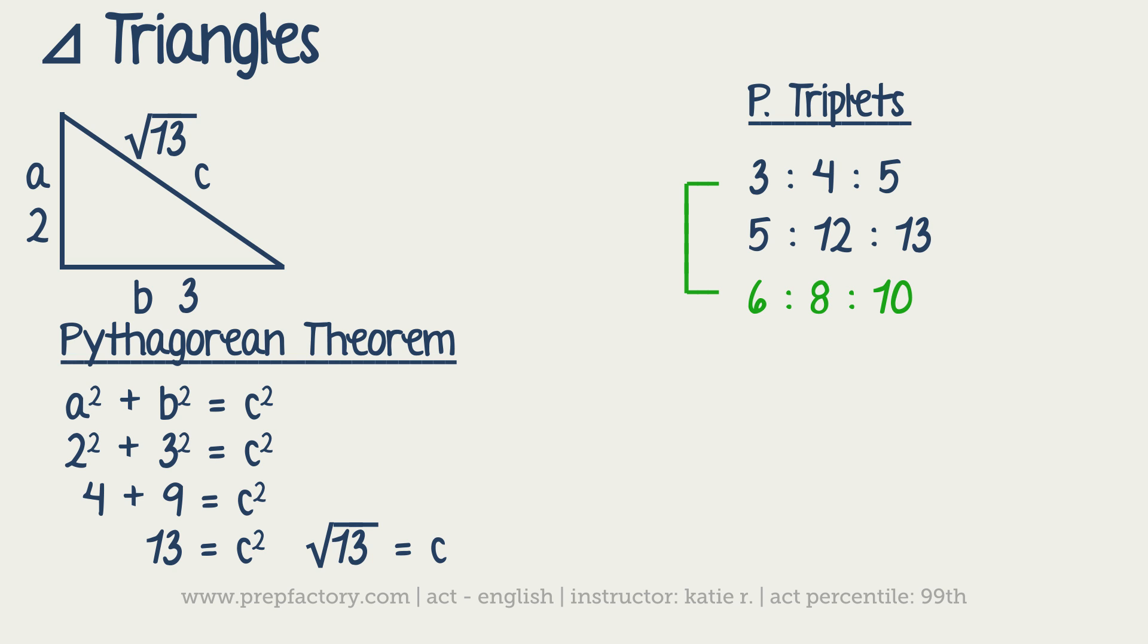And then 5, 12, 13s, you'll see 5, 12, 13s and you'll also see 10, 24, 26s, but they really don't multiply it by anything bigger than 2 for those. So if you know your triplets, then you can watch out for them and it saves you time. And let's go ahead and do a problem that demonstrates that.